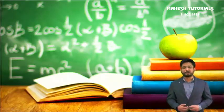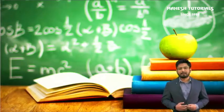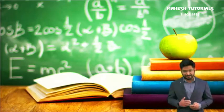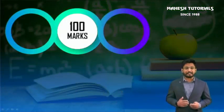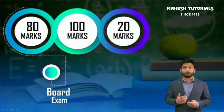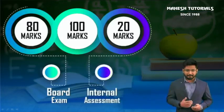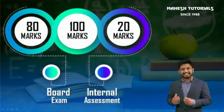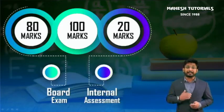Hello students, welcome to this moderation session of Science for CBSE 10th. In this session we'll be discussing how to maximize your score in science. The 100 marks in science are divided in two segments: 80 marks for the board paper and 20 marks for internal assessment. This session will focus on these 80 marks — how to get the maximum out of them and how to avoid any deductions.